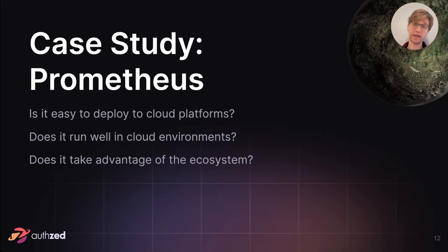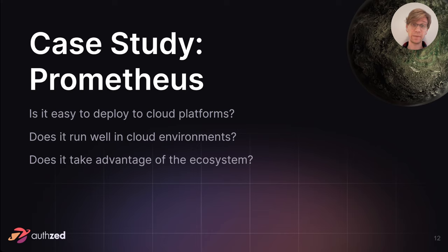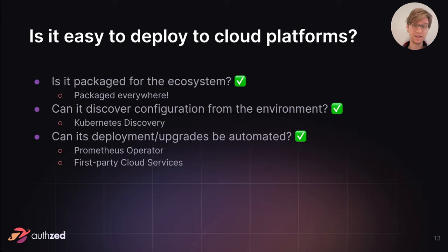I wanted to do a case study and look at what a really mature project in the ecosystem looks like. Prometheus has been around since before the CNCF was founded — it was originally started at SoundCloud by ex-Google engineers who wanted a metric system similar to Google's internal one. They eventually open sourced it and it became a community project. It has now graduated in the CNCF and is basically a staple of the observability category. Is it packaged for the ecosystem? Absolutely. You can install it on any Debian Linux, it has one of the most popular container images in any registry, there are Helm charts, Kubernetes manifests — it's everywhere. Third-party vendors even maintain LTS versions.